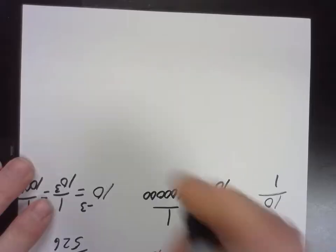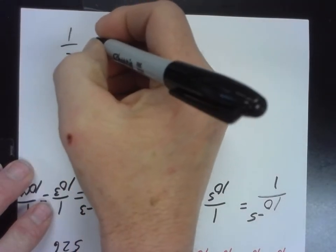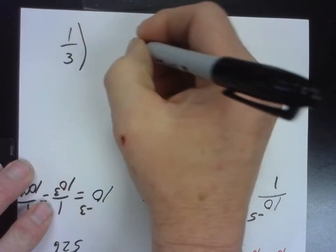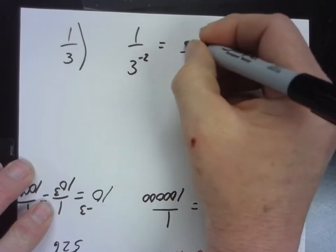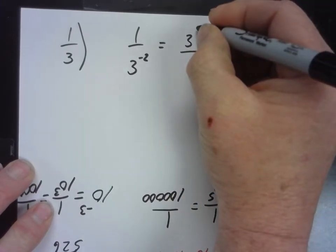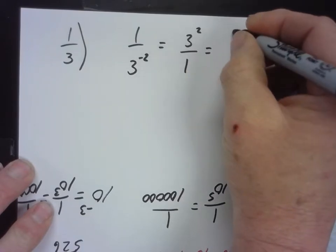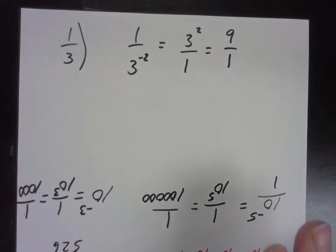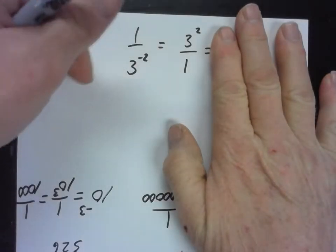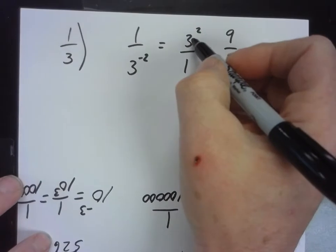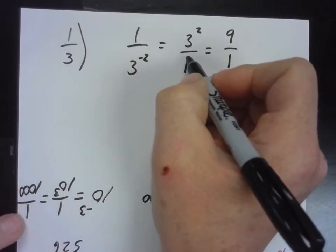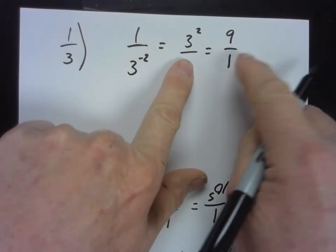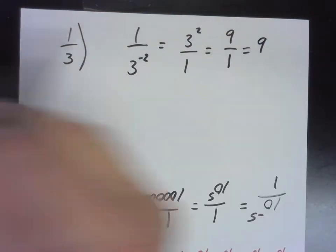Speaking of negative exponents, you guys are okay with this. You understand we can bring the three up to the numerator. What does this exponent become? Positive two over one. And this is nine over one. We're just moving the three up to the numerator. And you just have to remember, the numerator or denominator are never blank. Sometimes we leave them blank, but there's a one there all the time.